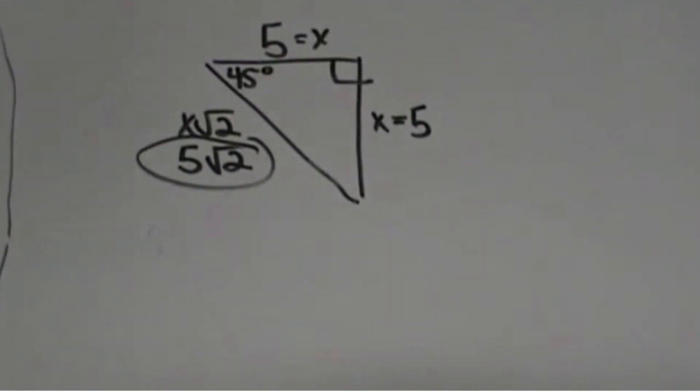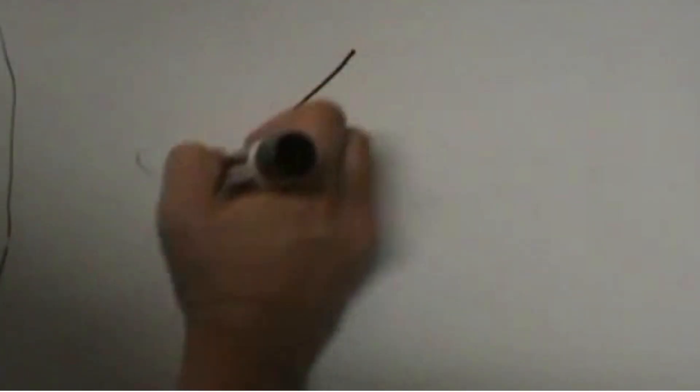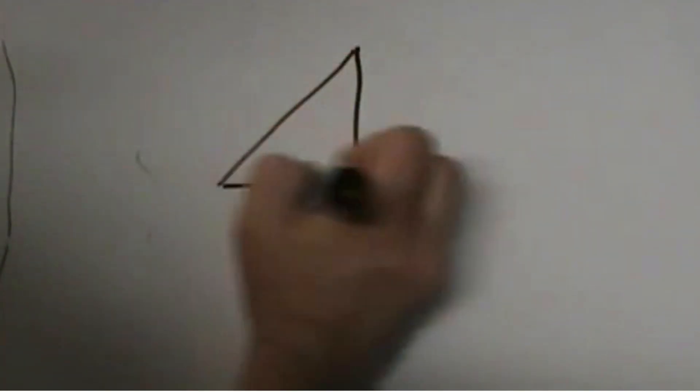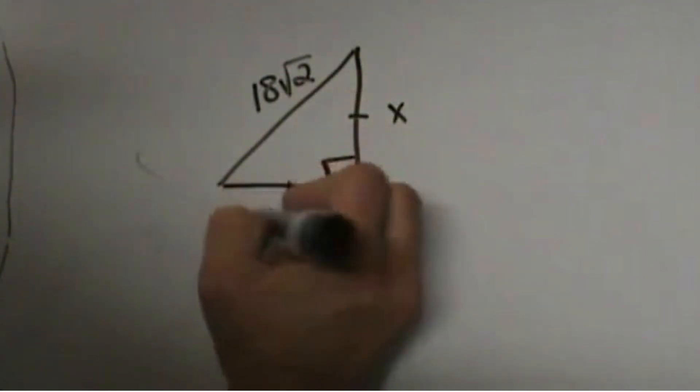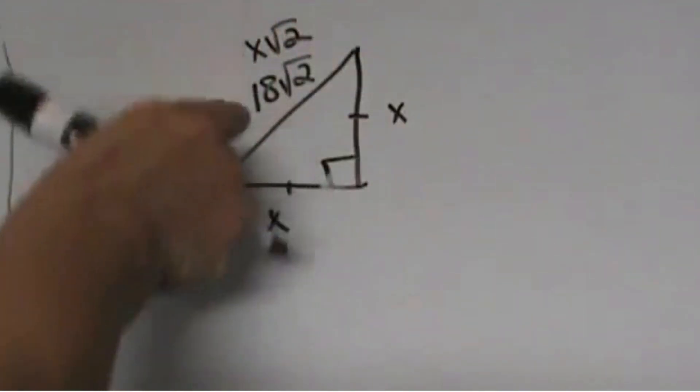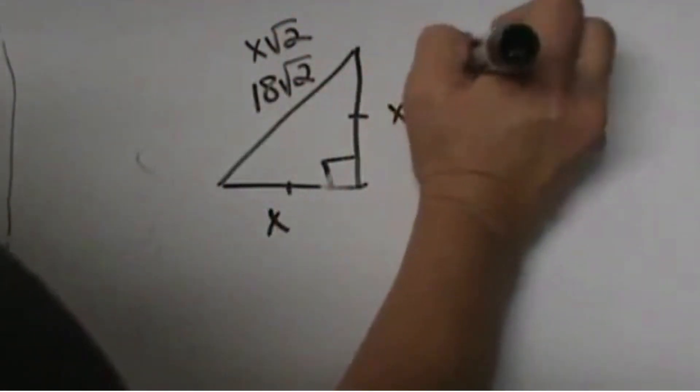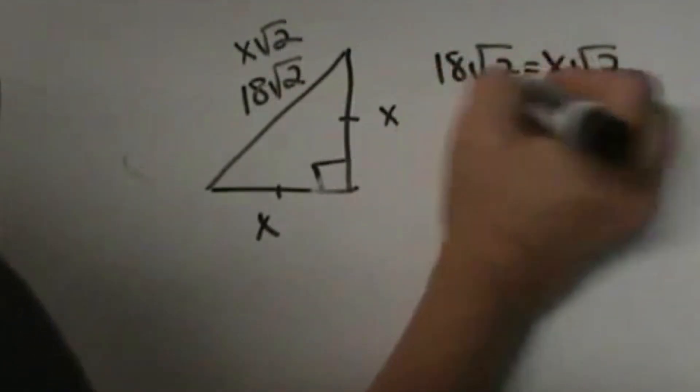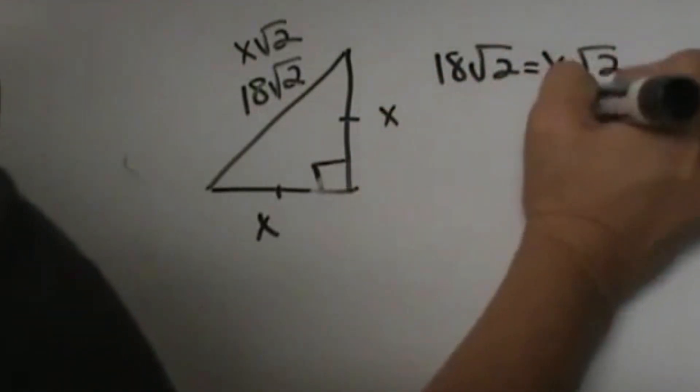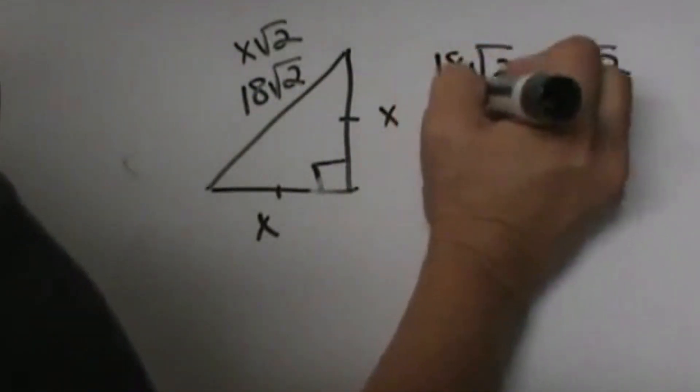What if you are given the hypotenuse? Let's look at the second scenario. Let me draw this up. You have 18 square root of 2 here and that is your hypotenuse. You are going to label this side x and the hypotenuse is x square root of 2. You are going to take 18 square root of 2 and set it equal to x square root of 2. To get the x by itself, you are going to divide both sides by the square root of 2.